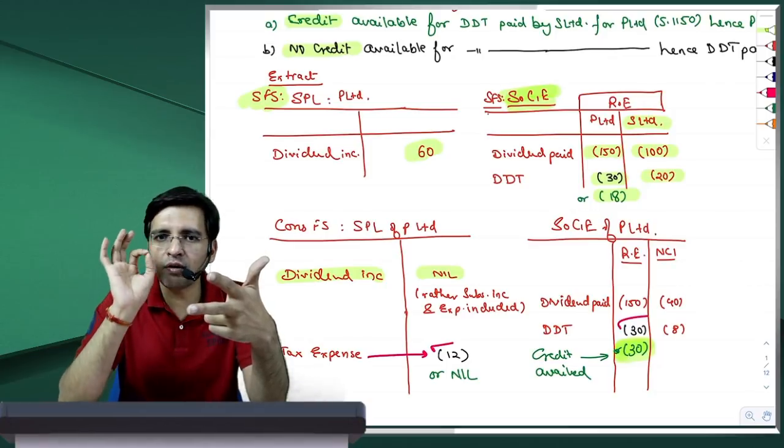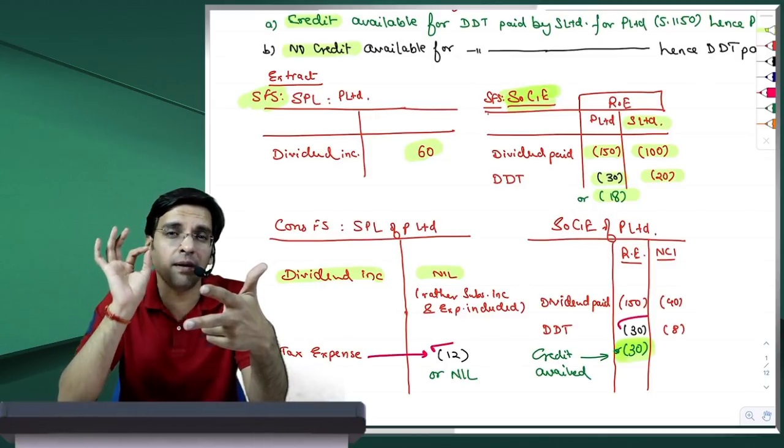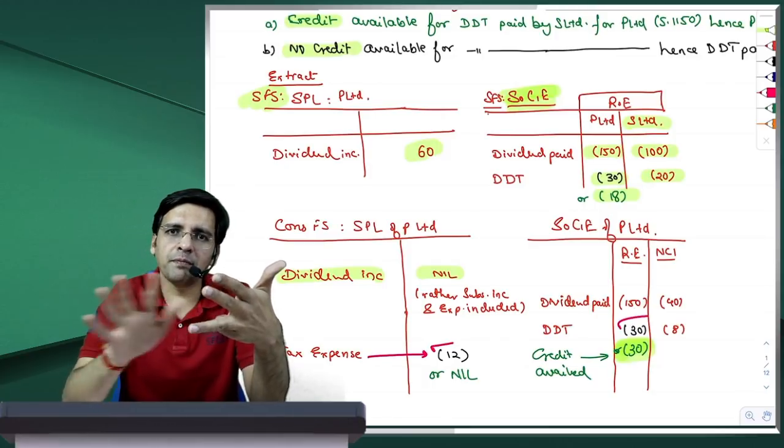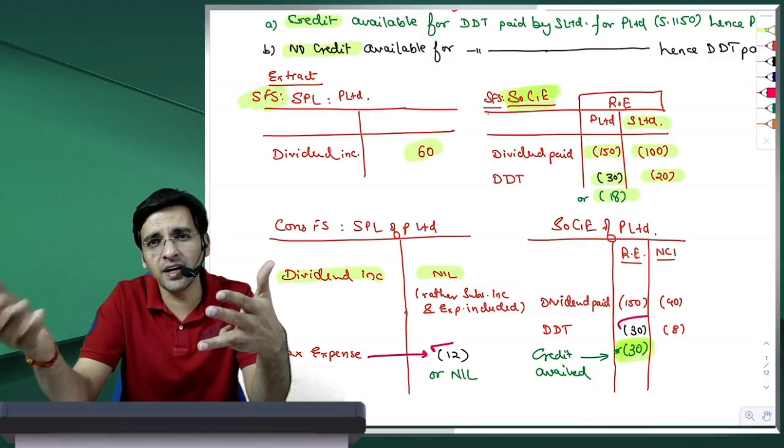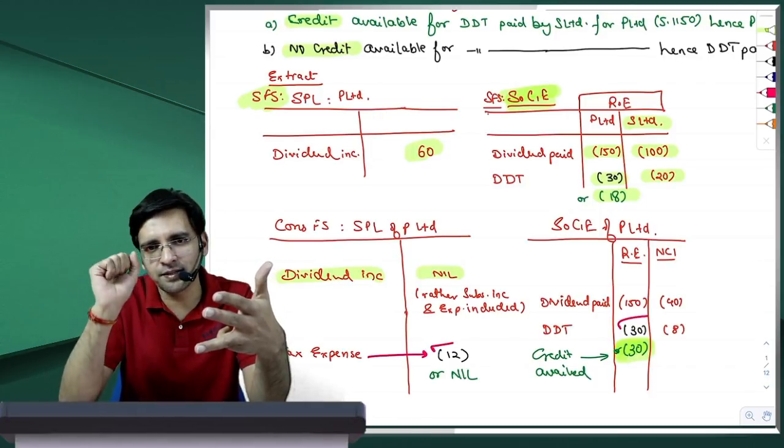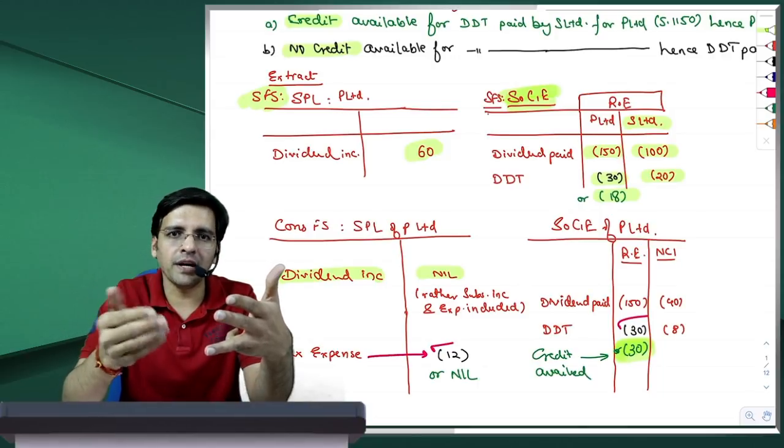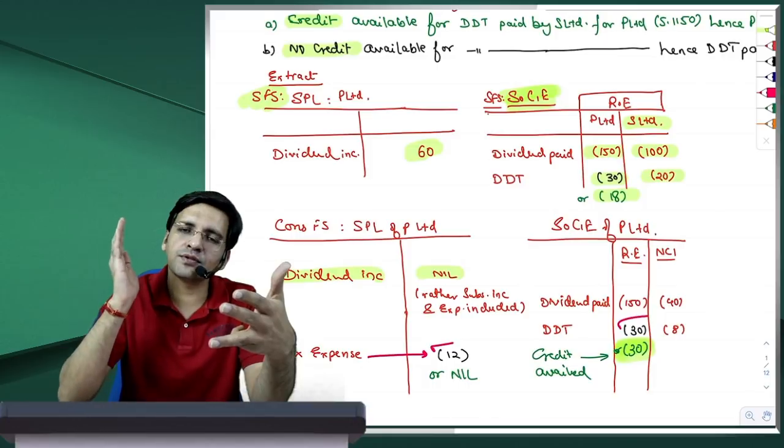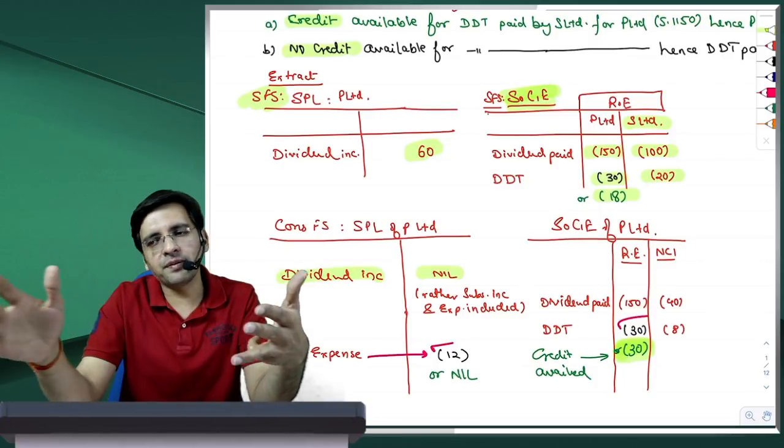Shurru mein accuracy pe zyada dhyan dijiyega for the first at least 15-20 minutes, and then concentrate on accuracy as well as speed. Third, shurru ke 15 minute mein identify, kaun sa question aapko chhodna hai, usko dimag se bhi nikal dena aur paper se bhi nikal dena. Woh identification shurru ke 15 minute mein karna anivarya hai. Aapko kya chhodna hai yeh patah padh jana chahiye in the reading time, in the first 15 minutes. Iske alawa, paper ko kaise divide karna chate ho yeh dimag mein sochke jaiye.